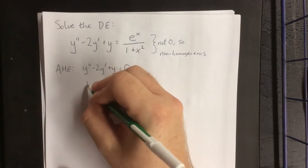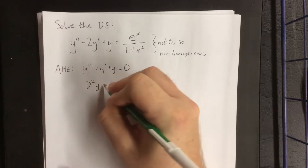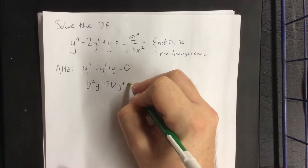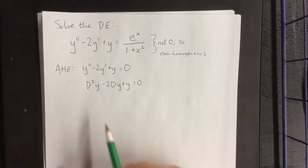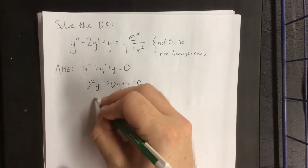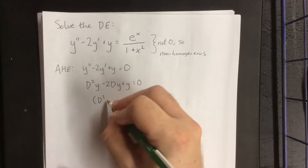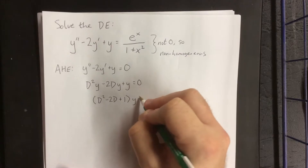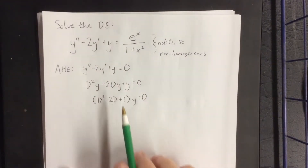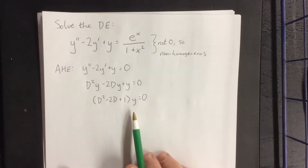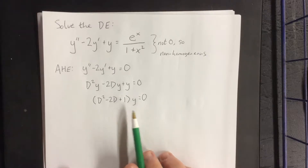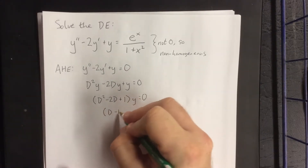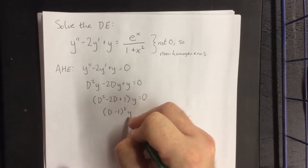Throwing in a couple of differential operators, we wind up with d squared y minus 2dy plus y is equal to zero. Factoring out the y gives us our polynomial differential operator for the problem. That polynomial differential operator is d squared minus 2d plus 1, times y, equal to zero, which factors quite nicely into (d minus 1) quantity squared.